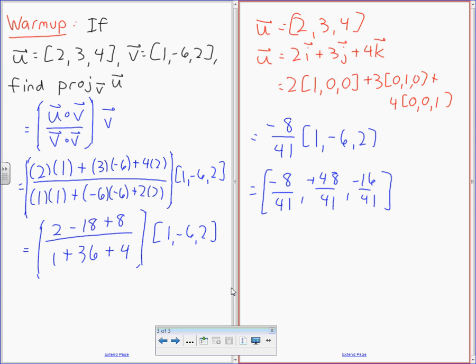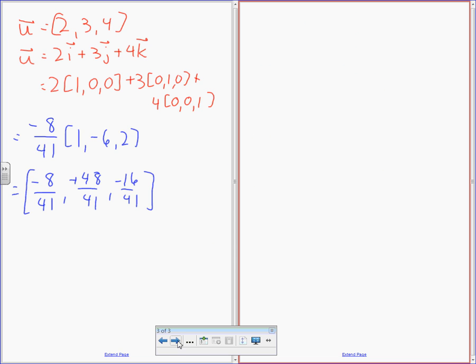There were some homework questions about defining the angles of a triangle between three points. I said just to move one of the points to the origin and then do the dot product. The other point I wanted to say was this: if I say that two vectors are orthogonal, what does orthogonal mean? Perpendicular.